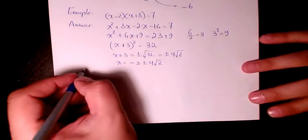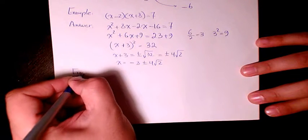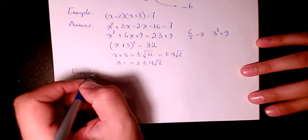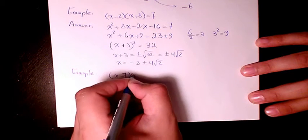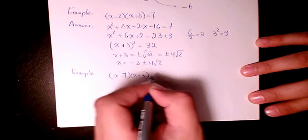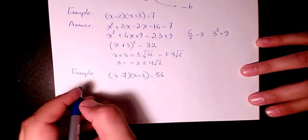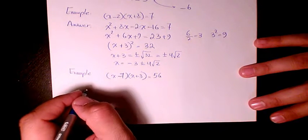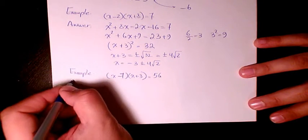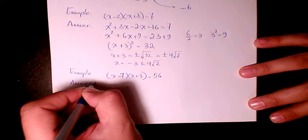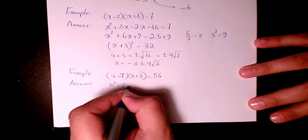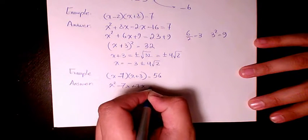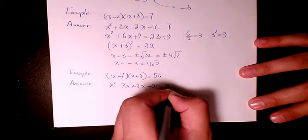Next example. X minus 7 times x plus 3 equals to 56. The answer will be x times x is x squared. Negative 7x plus 3x is minus 21 equals 56.